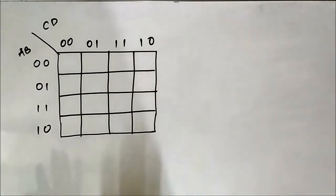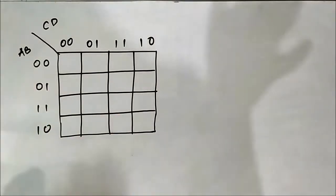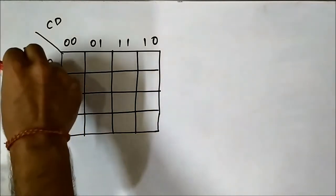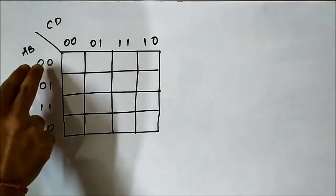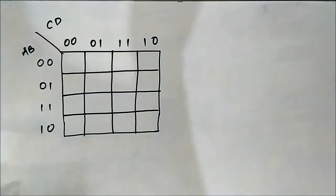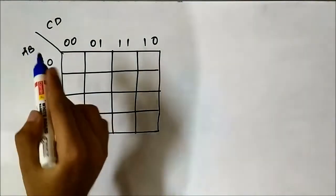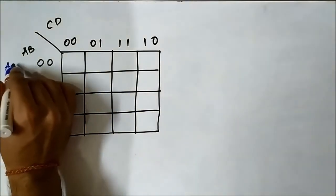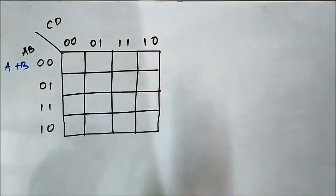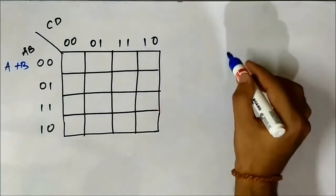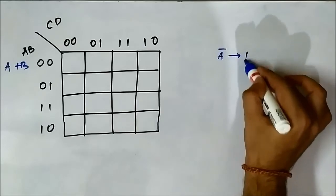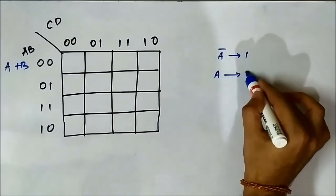Up to this point, the design and construction of the KMAP is the same for both SOP and POS. Now, the assignment of variables for each binary value — 0 and 1 — is what causes the difference. Here in POS, we write it as A or B, because in POS, complemented variables stand for 1 and uncompleted variables stand for 0.